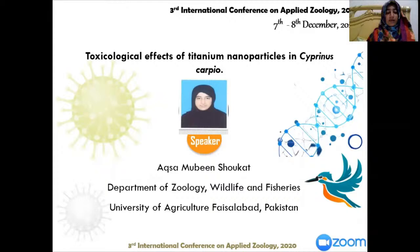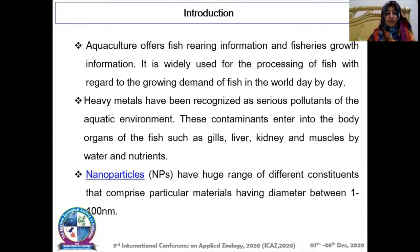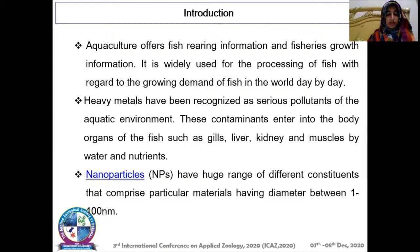Aquaculture is an extremely important subject — it offers fish-rearing and fisheries growth information and is widely used for fish processing regarding the growing demand for fish worldwide. The rising demand for seafood has also shown the significance of aquaculture. Water quality affects the growth and survival of fish, so water temperature, pH, total hardness, and dissolved oxygen play an important role. Fish are generally used to determine the health of the aquatic environment because toxins build up in the food chain and cause adverse effects on fish health.